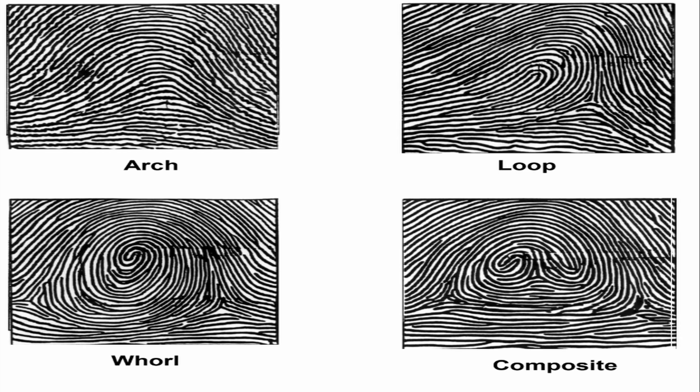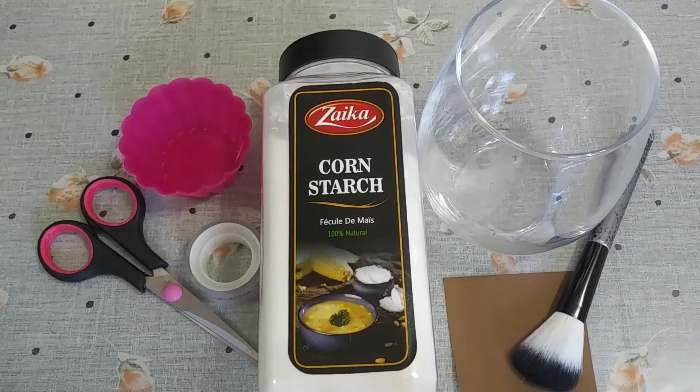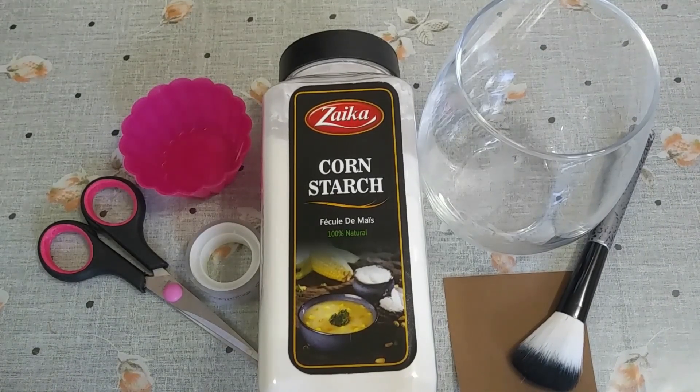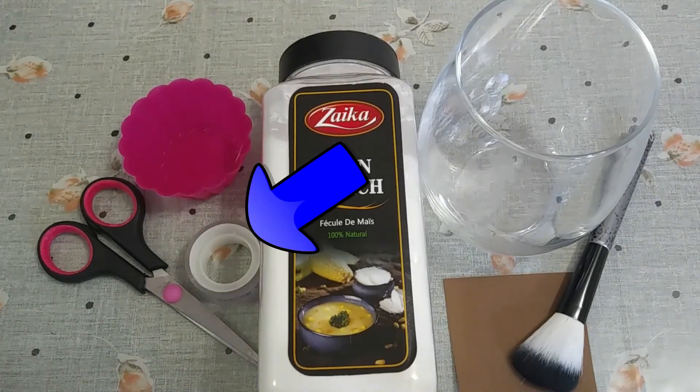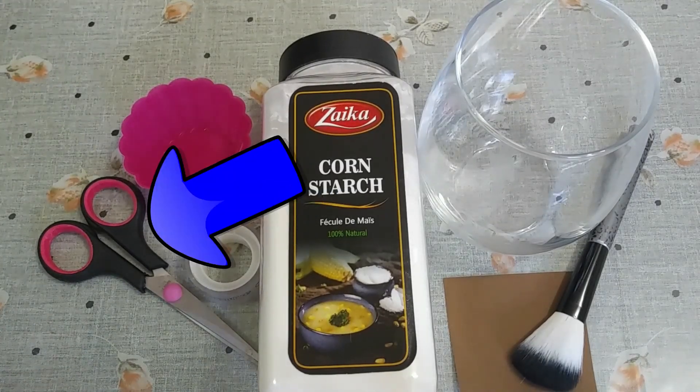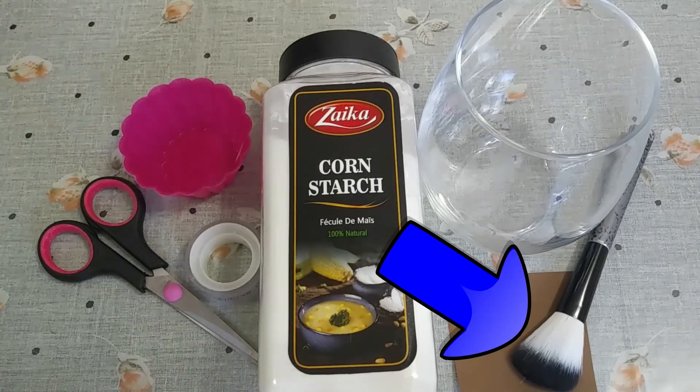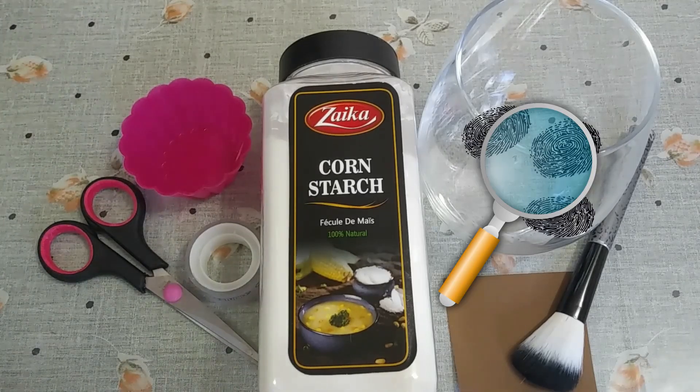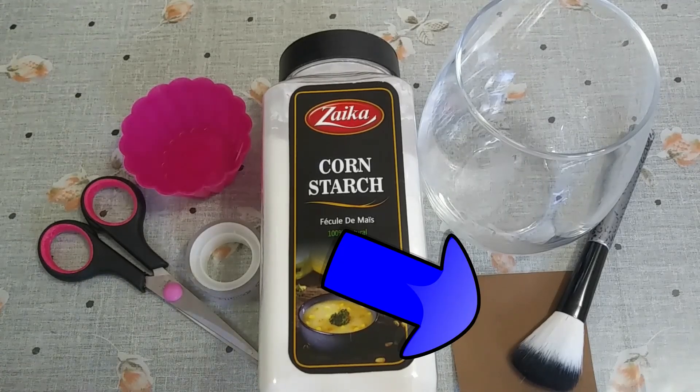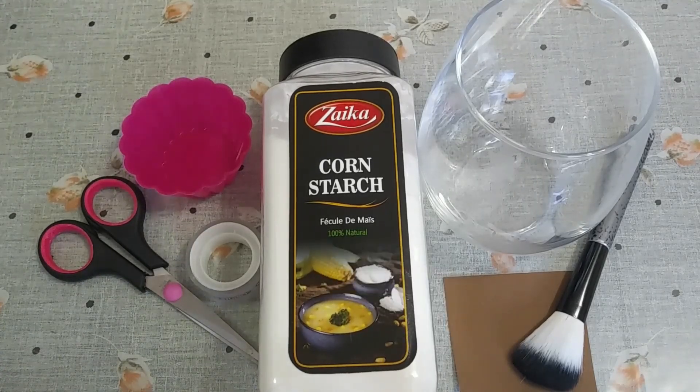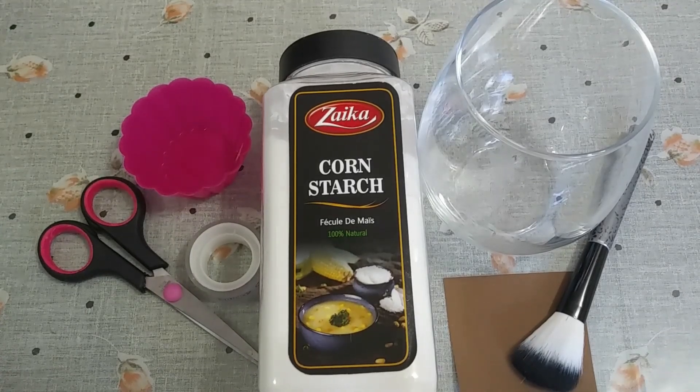After you're done, we can start on the second activity, lifting our fingerprints from glass. For the second activity, you're going to need a glass cup, which we need to be very careful with, clear tape, scissors, cornstarch, a small bowl, a paintbrush or a makeup brush. You can use a magnifying lens or a phone camera. And you also need a dark piece of paper, like a piece of black construction paper. I'm using a piece of brown paper instead. Anything that will contrast with white will work.